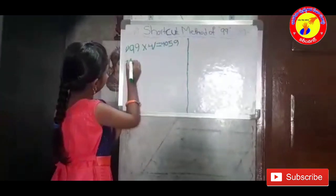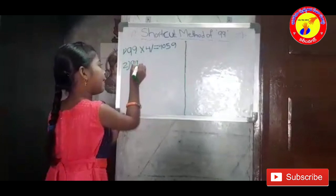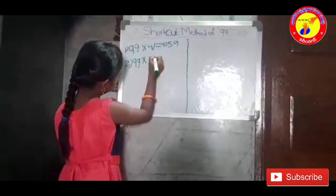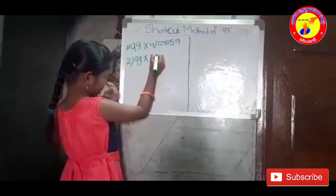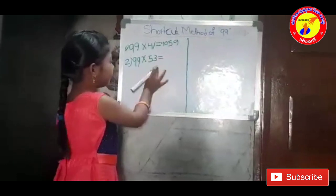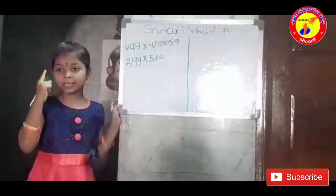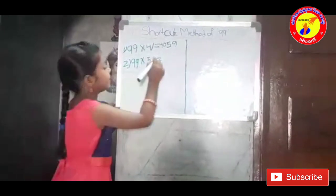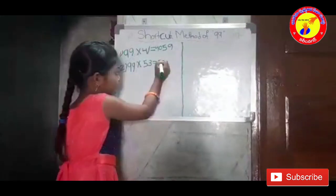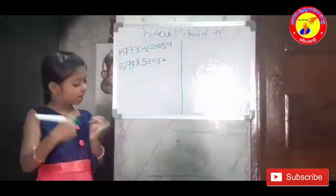Second one: 99 into 53. In 53, subtract 1 — what number will come? It is 52. In 5, what number means 9 will come?